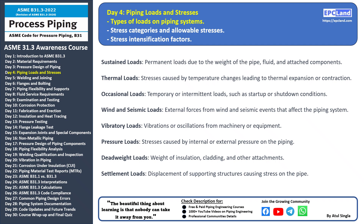Sustained loads are permanent loads that the piping system experiences during normal operation. They include the weight of the pipe itself, the fluid being transported, and any attached components like valves and fittings. Thermal loads arise because temperature changes can lead to thermal expansion or contraction of the pipe, resulting in stresses that the system must accommodate without damage.